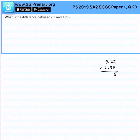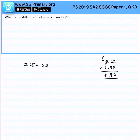You will easily get the answer, which is 4.95. So 7.25 minus 2.3 should give you 4.95 — that is the solution for this question.